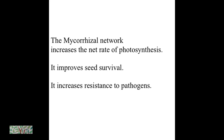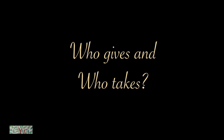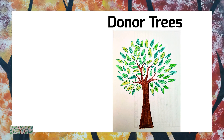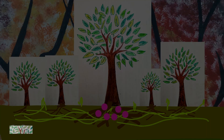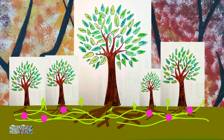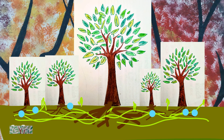The mycorrhizal network increases the net rate of photosynthesis, improves seed survival, and also increases resistance to pathogens. The donor plant is generally nutrient-rich, older, larger, and may have greater access to sunlight. Older mother trees supply nutrients to their seedlings, and cutting them weakens the young ones.